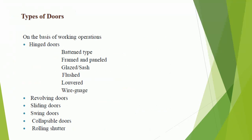Types of doors based on working operations include: hinged doors (battened type, framed and paneled, glazed/sash, flushed, louvered, wire gauge), revolving doors, sliding doors, swing doors, collapsible doors, and rolling shutters.